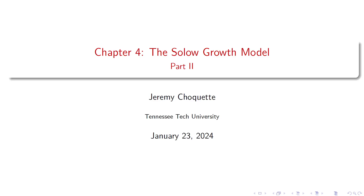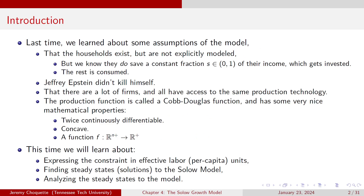We are now on part two of the Solow growth model. In part one, we learned about some of the assumptions of the model — like households existed but weren't explicitly modeled. We knew they saved a constant fraction of their income; whatever they save gets invested, whatever they don't save gets consumed. We learned there are a lot of firms, they all have access to the same production function. The production function is Cobb-Douglas, which is really nice.